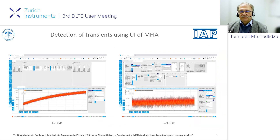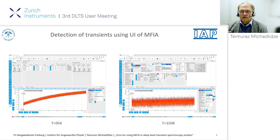As it was nicely presented by Ron today, one can observe capacitance transients. You see that at 95K there is a transient of capacitance, and at 150K there is no transient. Before the actual DLTS spectrum measurements, we just recommend choosing all MFA settings like gating, timing, frequency, and so on from the user interface. Then these parameters can be inputted in the measurement program, which is necessary for temperature management, recording a data file, and automation of the whole measurement routine.